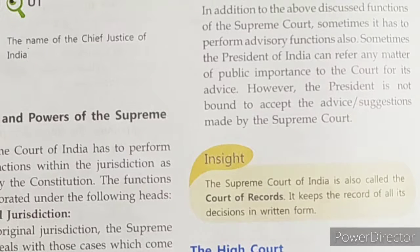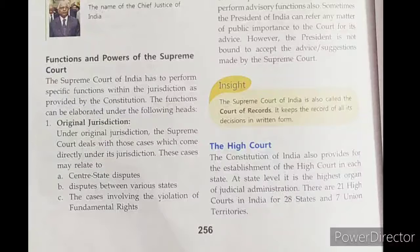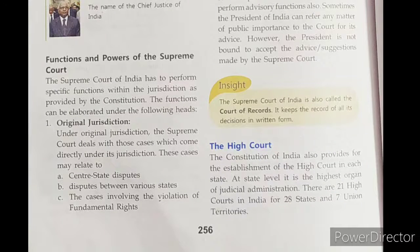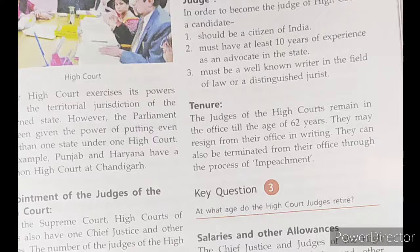High Courts are established under Article 214 of Part 6, Chapter 5 of the Indian Constitution. The Constitution provides for one High Court for every state of India. It is the highest judicial authority in a state. The Parliament has the power to establish a common High Court for two or more states — there is only one High Court for the two states of Haryana and Punjab.